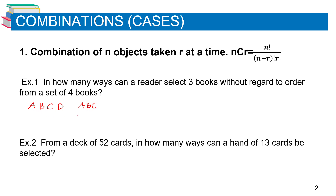The second selection is A, B, and D. The next selection is A, C, and D. The last selection is B, C, and D. Note that ABC is equal to BCA, so that is one counting — no repetition of letters. We exhaust all possibilities: ABC, ABD, ACD, and BCD, giving us four possible ways to select three books without regard to order.